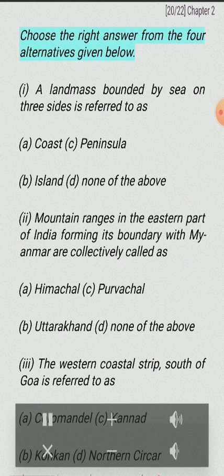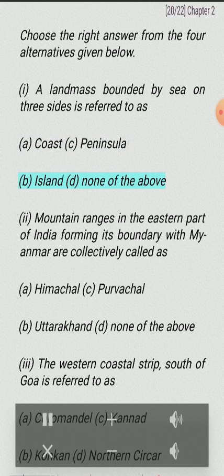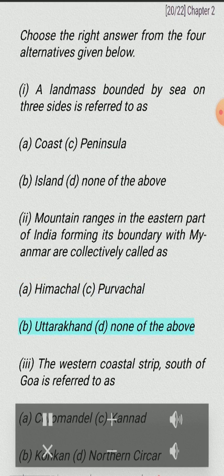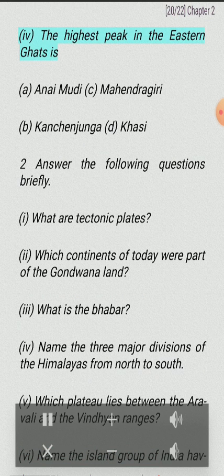Exercise 1: Choose the right answer from the four alternatives given below. (I) A landmass bounded by sea on three sides is referred to as — (A) coast, (B) island, (C) peninsula, (D) none of the above. (II) Mountain ranges in the eastern part of India forming its boundary with Myanmar are collectively called — (A) Himachal, (B) Uttarakhand, (C) Purvanchal, (D) none of the above. (III) The western coastal strip south of Goa is referred to as — (A) Coromandel, (B) Konkan, (C) Kannad, (D) Northern Sarkar. (IV) The highest peak in the Eastern Ghats is — (A) Anai Mudi, (B) Kanchenjunga, (C) Mahendragiri, (D) Khasi.